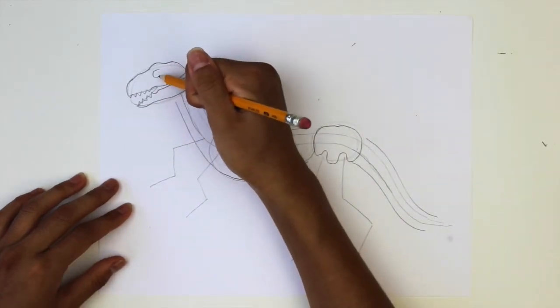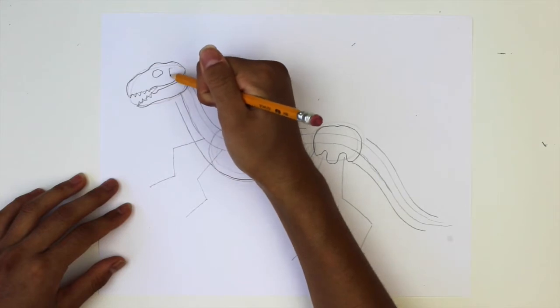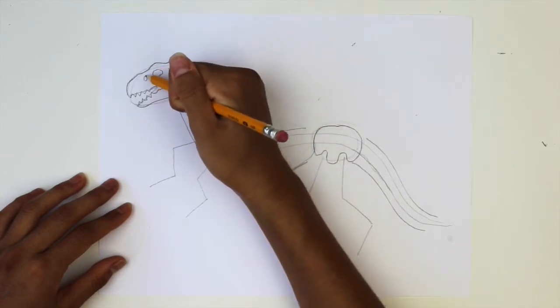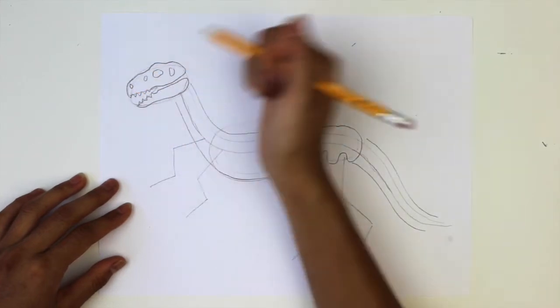Next draw an irregular oval for the eye, two vertical ovals on either side of the eye, and a small oval for the nostril.